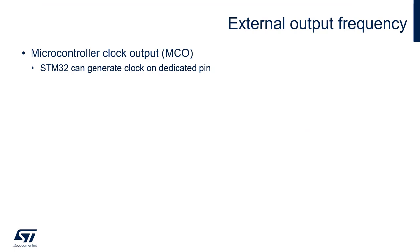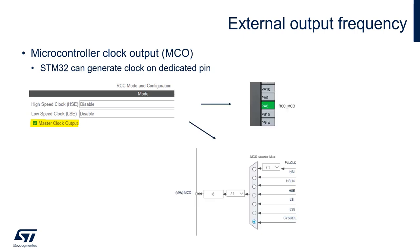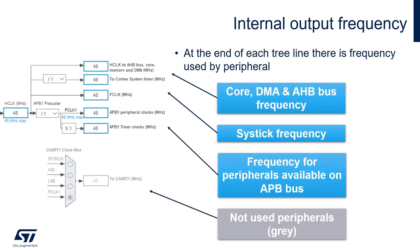An STM32 device can generate a clock signal on one of its external pins — this is called MCO. If you enable this feature in the RCC clock configuration, it will assign one pin in the pinout and enable MCO clock selection in the clock tree, where you can select the source of the clock generated on that pin. At the end of each tree line, there is the frequency used by each peripheral. The clock tree differs device by device. Here is an example of an STM32 F0 device — there is a clock frequency for the core, DMA, AHB bus, SysTick frequency, frequency for peripherals on the APB bus, and the greyed-out one for USART, which is not enabled in CubeMX.